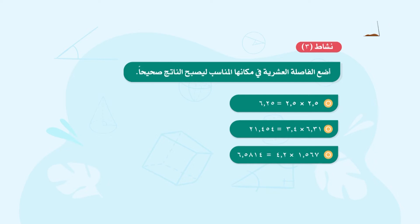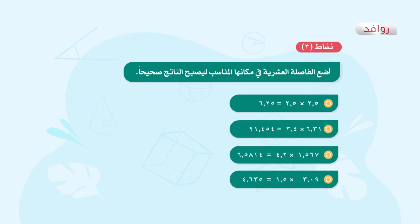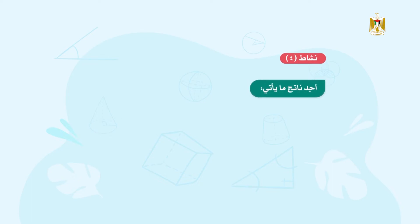ننتقل إلى الفرع د من النشاط الثالث: 3 صحيح و9 من 100 ضرب 1 صحيح و5 من 10. عند ضرب 309 في 15 يكون الناتج 4635. الآن نضع الفاصل العشرية: في العدد الأول منزلتان عشريتان، وفي العدد الثاني منزلة واحدة، فمجموع المنازل العشرية يساوي 3 منازل. نضع الفاصل بعد 3 منازل ونبدأ العد دائماً من جهة اليمين، ليكون الناتج 4 صحيح و635 من 1000.